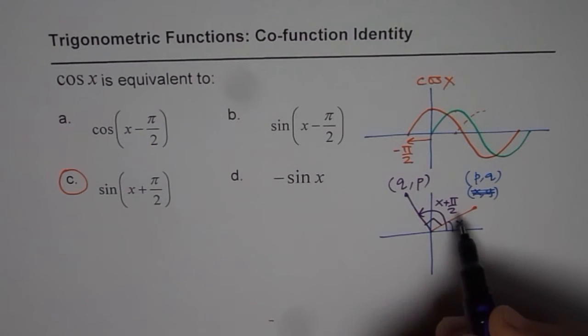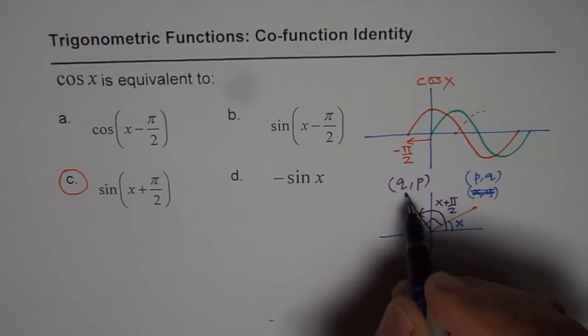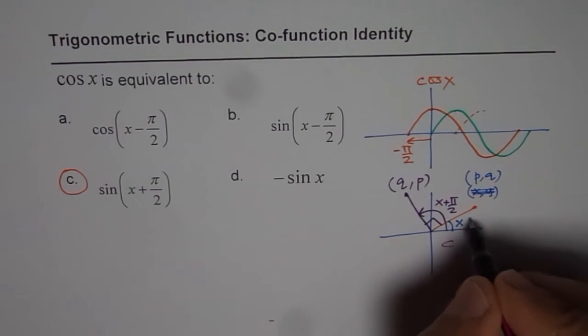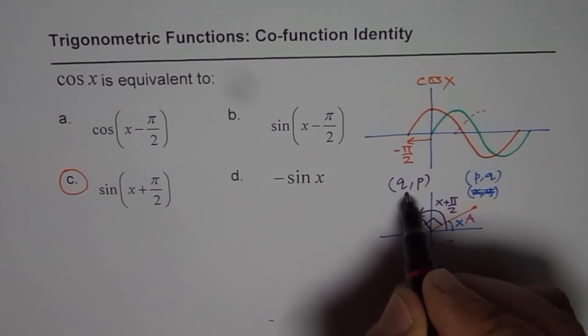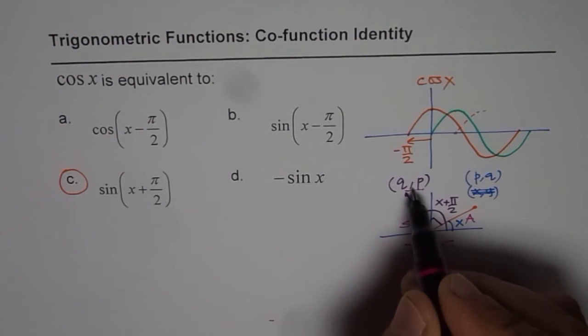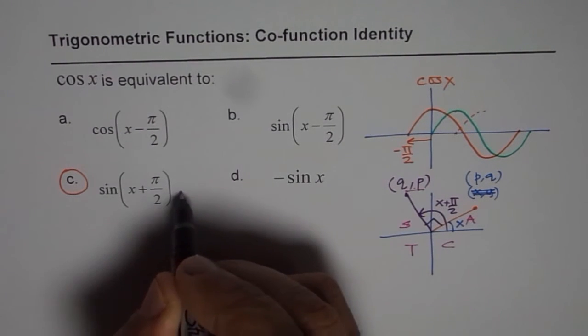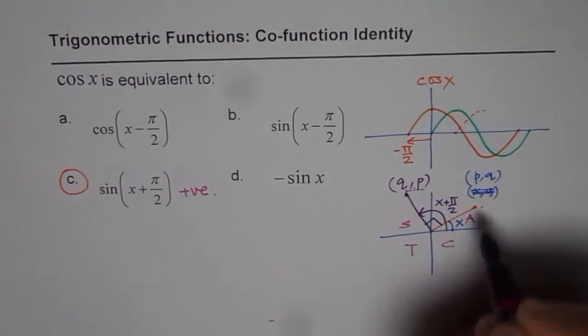is C-A-S-T. Here sine is positive. Since sine is positive, sin(x + π/2) will be positive. This is a positive value, and cos x, which is in this quadrant, is